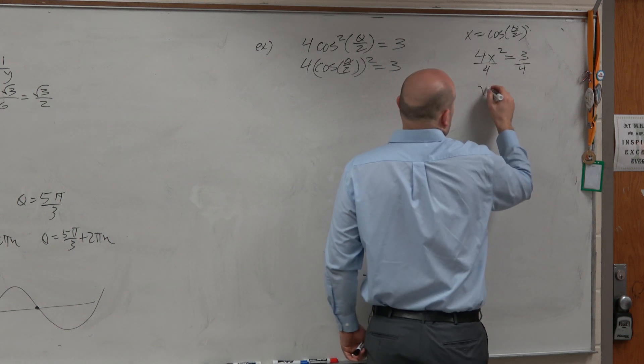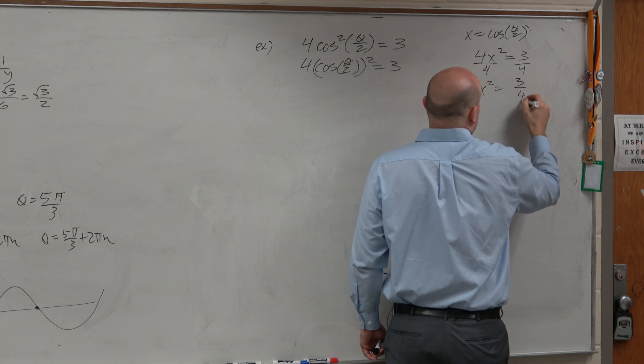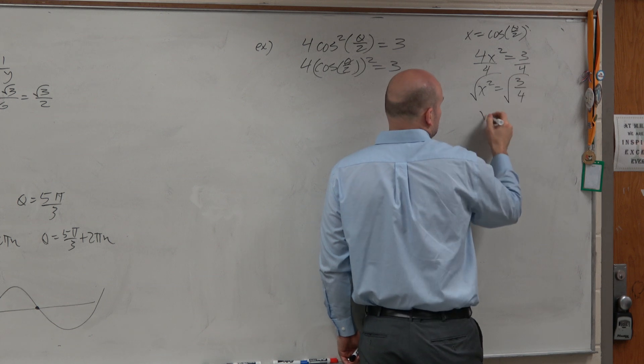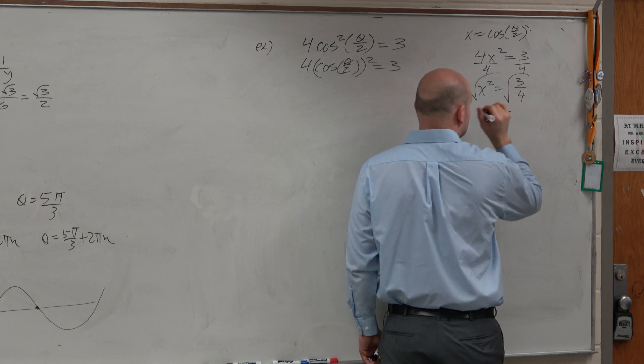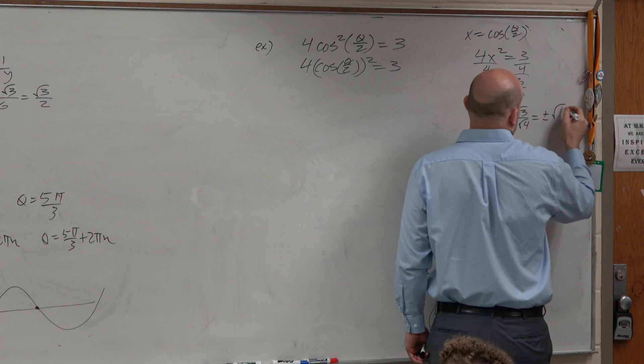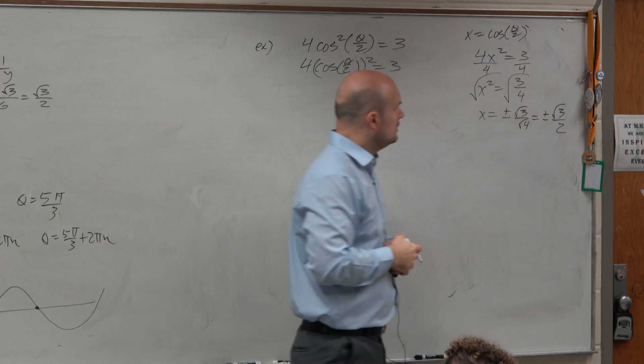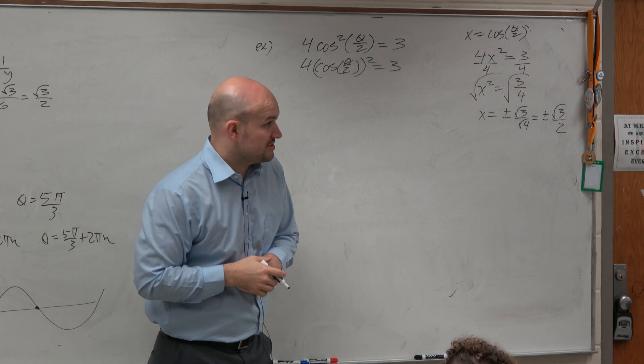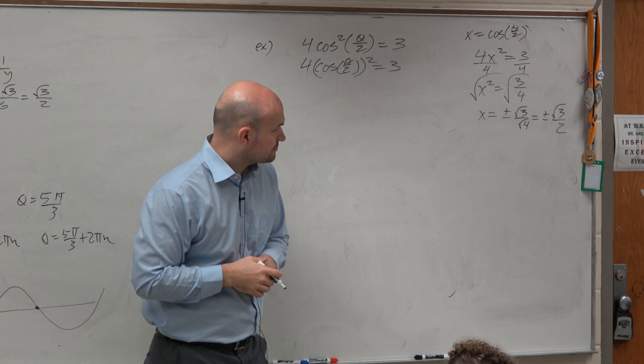Divide by 4. x squared equals 3 over 4. Not going to make the mistake like I did last class period. Got to do plus or minus, so don't forget that.